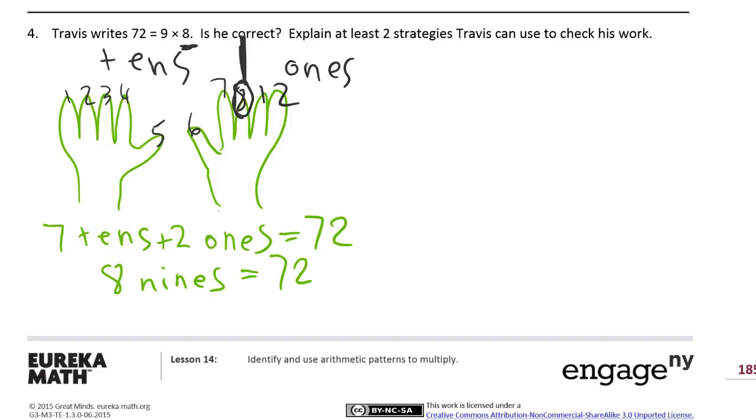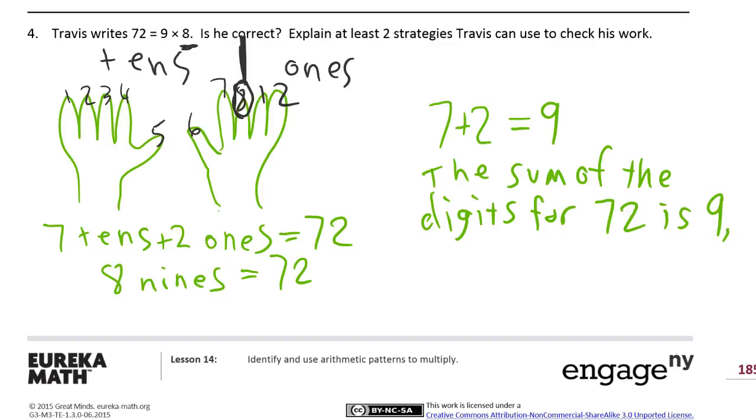Then we want to explain the other one, the adding of the digits. 72, 7 plus 2 equals 9. The sum of the digits for 72 is 9. So 72 is a product of 9.